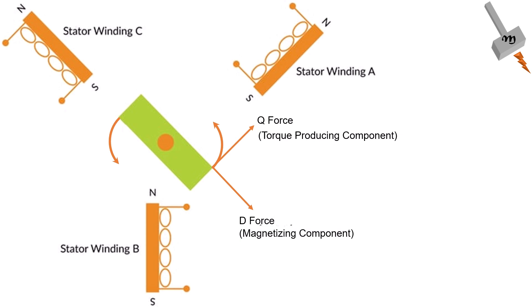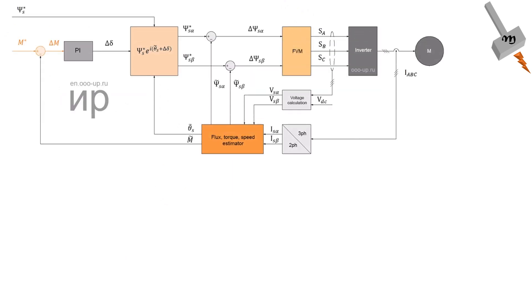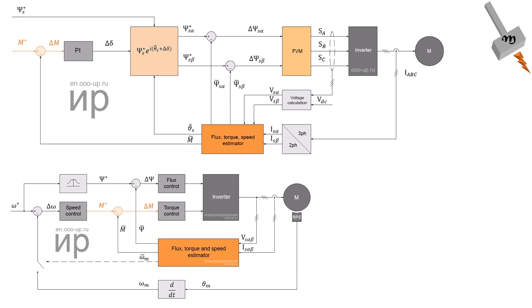Unlike scalar control, which operates based on a fixed voltage-to-frequency ratio, vector control dynamically adjusts the motor's current to ensure that the torque-producing component is kept orthogonal to the rotor flux. This results in higher efficiency, especially at low speeds or when torque is required. Vector control can be implemented in both open-loop and closed-loop configurations.